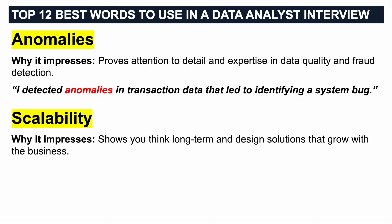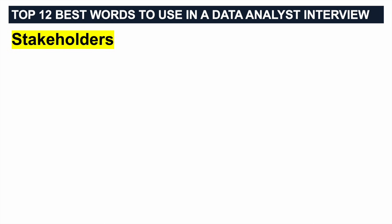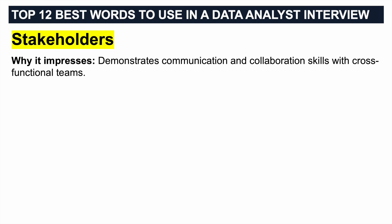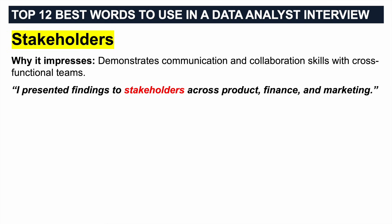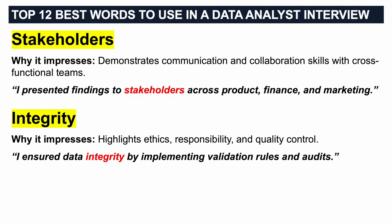SCALABILITY — why it impresses: it shows you think long term and design solutions that grow with the business. You could say: 'I built a scalable ETL pipeline to process real-time customer feedback.' The next best word is STAKEHOLDERS. Why this impresses — it demonstrates communication and collaboration skills with cross-functional teams. You could say: 'I presented findings to stakeholders across product, finance, and marketing.' Next best word: INTEGRITY. Why this impresses — it highlights ethics, responsibility, and quality control. You could say: 'I ensure data integrity by implementing validation rules and audits.'